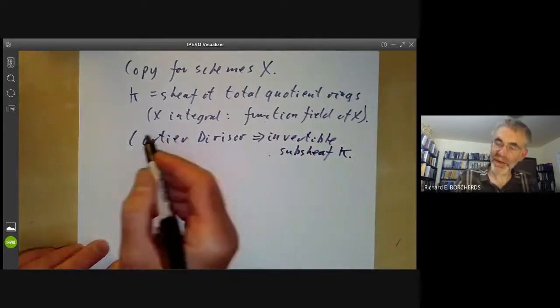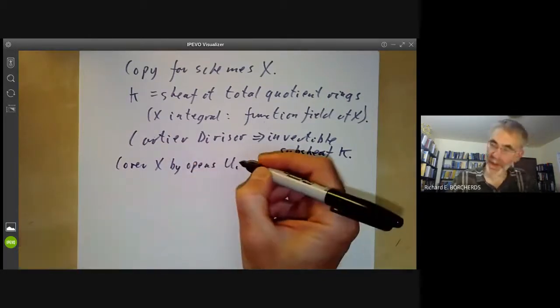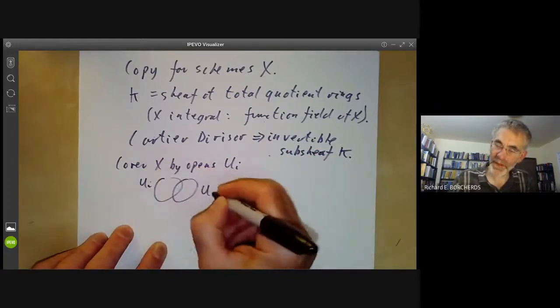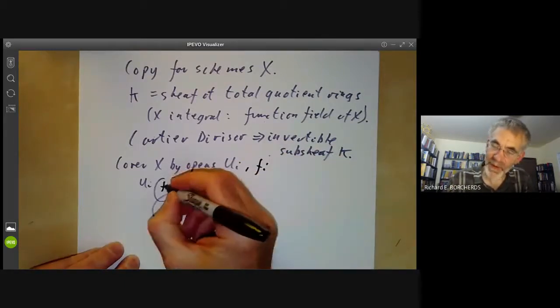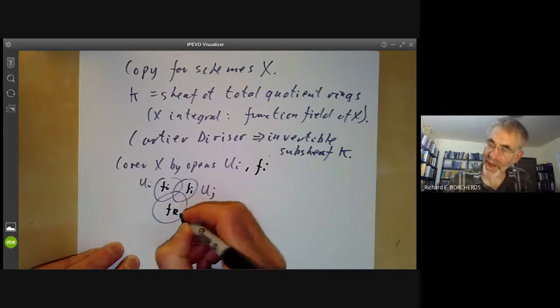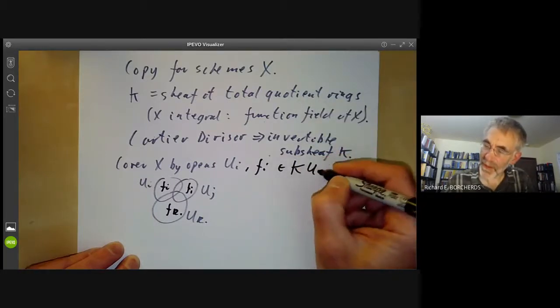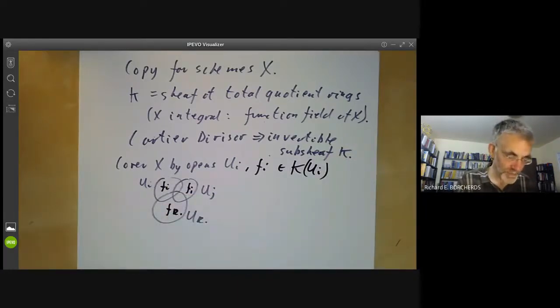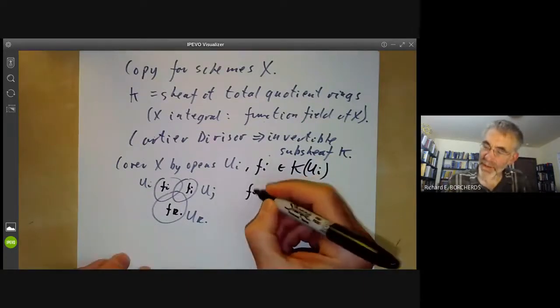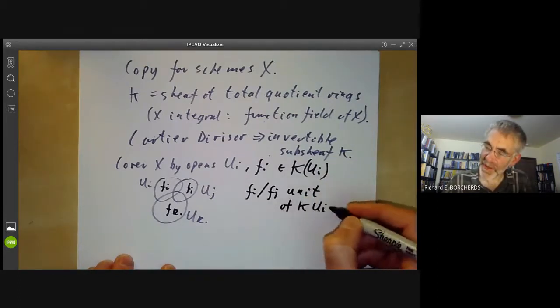The Cartier divisor means we cover X by open subsets u_i, u_j, u_k, and so on. On each of these we have a function f_i. So we've got f_i on u_i and f_j on u_j and f_k on u_k, which are sections of the total quotient sheaf. You can think of them as meromorphic functions on u_i. And f_i over f_j has to be a unit of K on u_i intersection u_j.